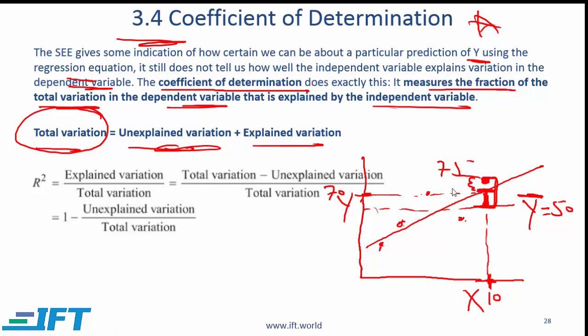And then there is a part which is not explained. So there is explained variation and that which is not explained is called the unexplained variation.